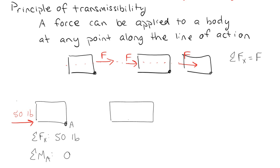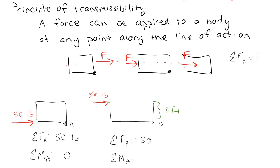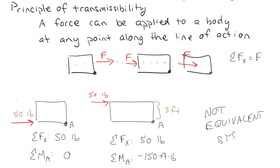As opposed to if I have that same thing but I move the force vertically — let's say I move it 3 feet — the sum of the forces in the x direction is still 50, but the sum of the moments about A is now going to be 50 times 3, which is negative 150 foot-pounds. So these are not equivalent systems, because they don't have the same moment and forces on both.